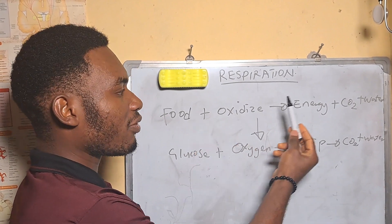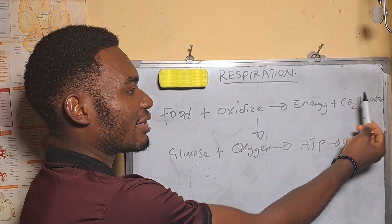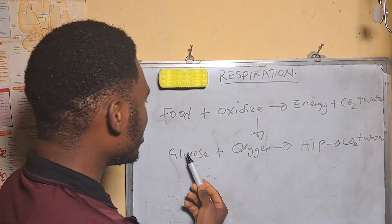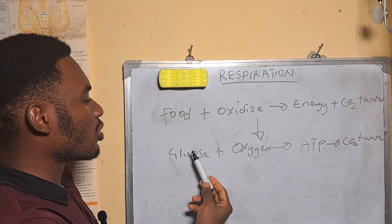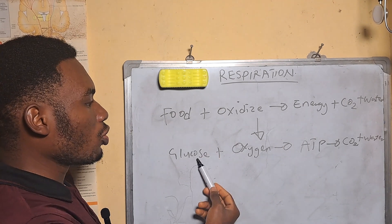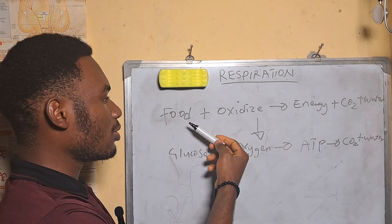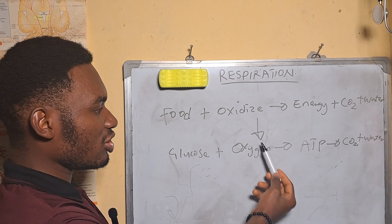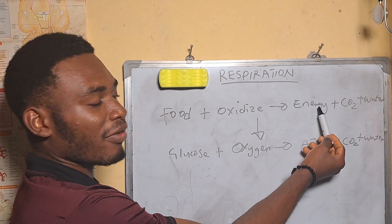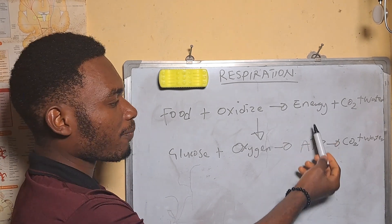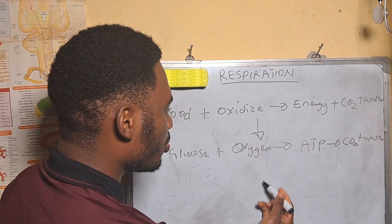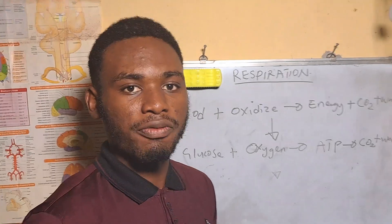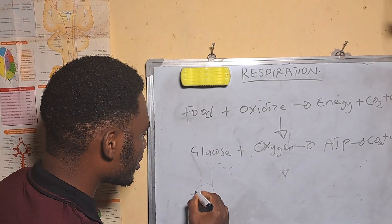In a nutshell, we oxidize the food that we take in to give us energy, carbon dioxide, and water. The main food source we're taking is glucose. Glucose plus oxygen will give us ATP — which is the form of energy in the body — then CO2 plus water. This brings us to the real equation of respiration.